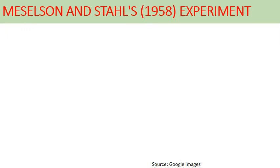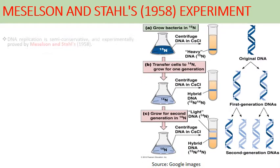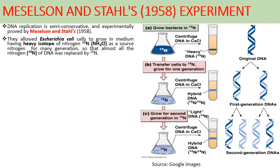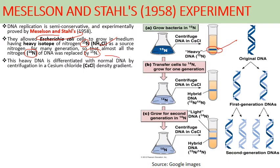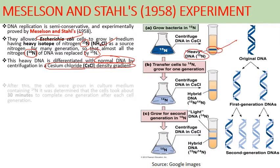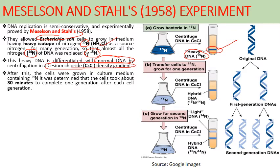Next comes Meselson and Stahl's experiment, the first experiment that showed DNA replication is semi-conservative in nature. They grew E. coli cells in a medium containing the heavy isotope of nitrogen, N15, provided through ammonium chloride solution, for many generations so that almost all normal N14 was replaced with N15. After centrifugation in cesium chloride density gradient, the band was found at the base because it was the heavy isotope.